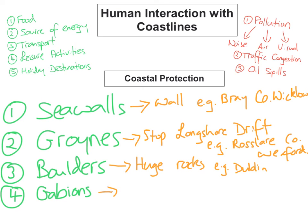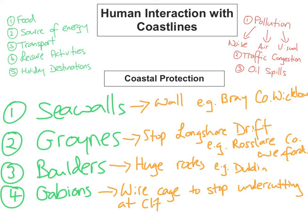Gabions are rectangular wire cages containing smaller stones and are placed at the foot of cliffs to prevent undercutting. An example of these can be found at Tramore Beach in County Waterford.